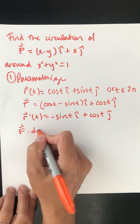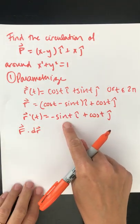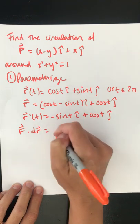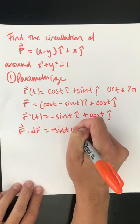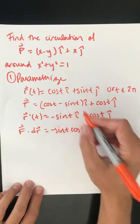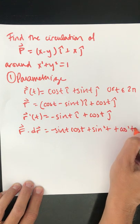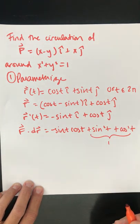Now I just need to find f dot dr. So I have negative sine t cosine t as a dot product, so I'm not going to have a vector anymore, plus sine squared t plus cosine squared t. All of this is going to turn into 1.